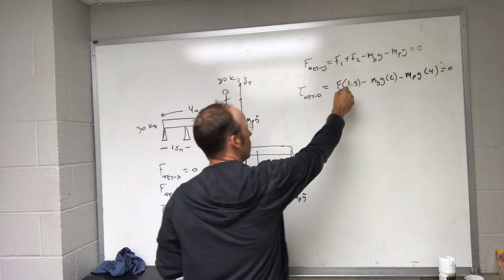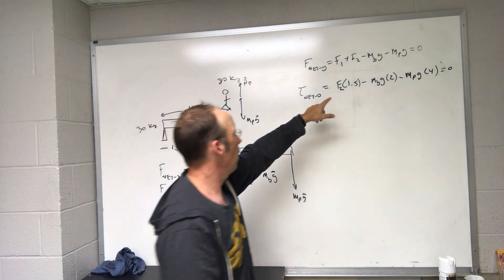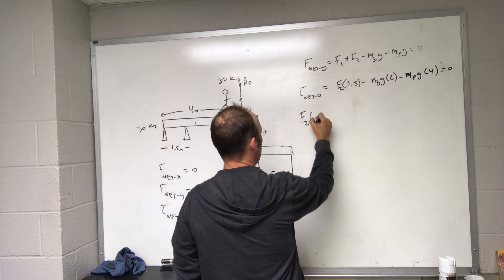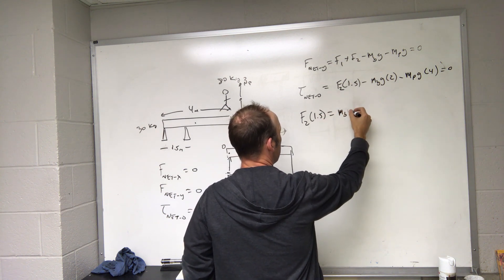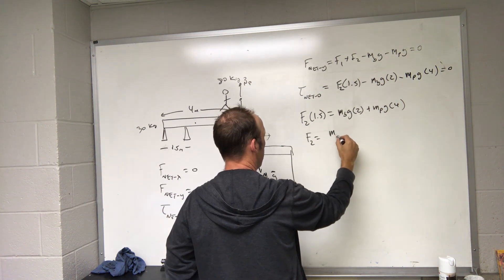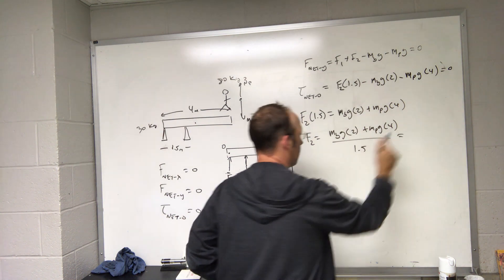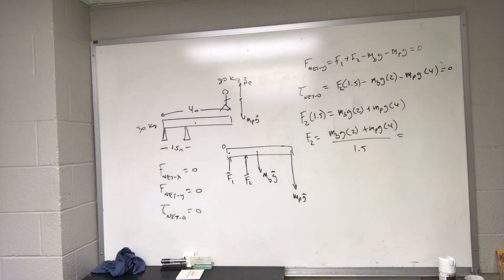So from that, I can actually solve for F2 because there's only one thing I don't know in that equation, and that's F2. So I'm going to add this to both sides, and I get F2 times 1.5 equals Mb G times 2 plus Mp G times 4. And I can divide that. F2 equals Mb G times 2 plus Mp G times 4 over 1.5. And I can put that in my calculator real quick. So 30 times 9.8 times 2 plus 80 times 9.8 times 4 divided by 1.5. 2482.